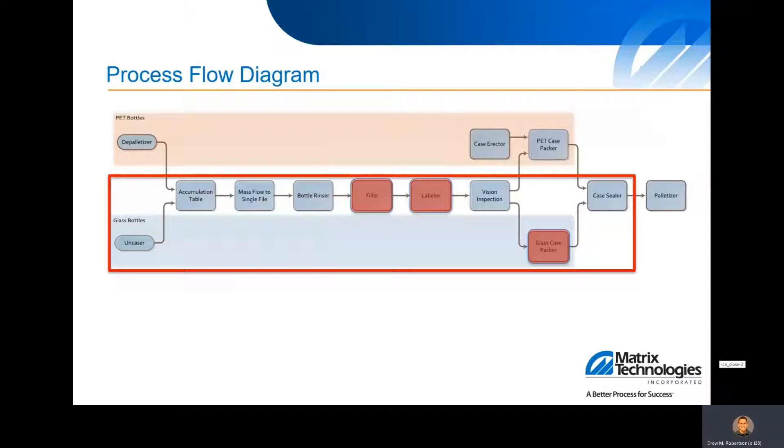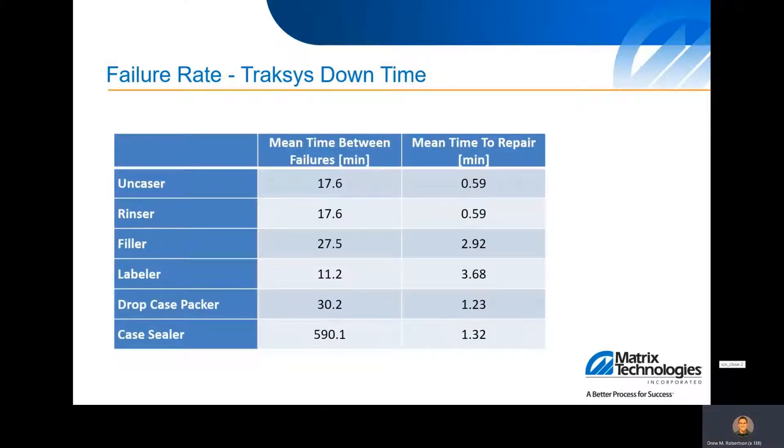From being on site, we noticed there's a few pieces of equipment that are a little bit more troublesome. Like the case packer is having trouble keeping up with rate, and the labeler and the filler are so close coupled that if one of them goes down, the other one's taken down almost immediately.